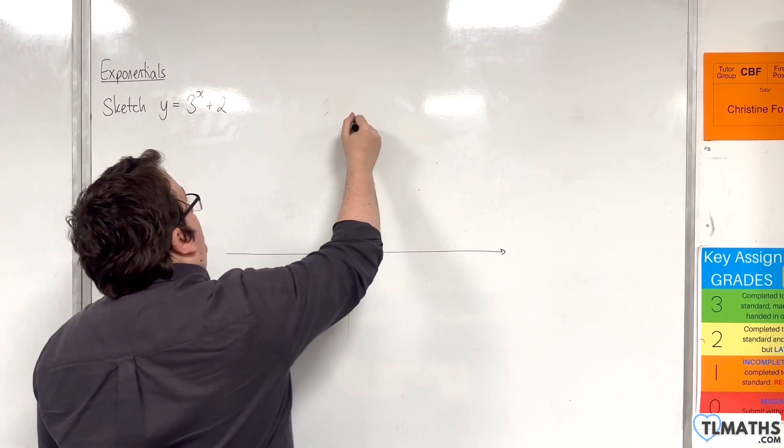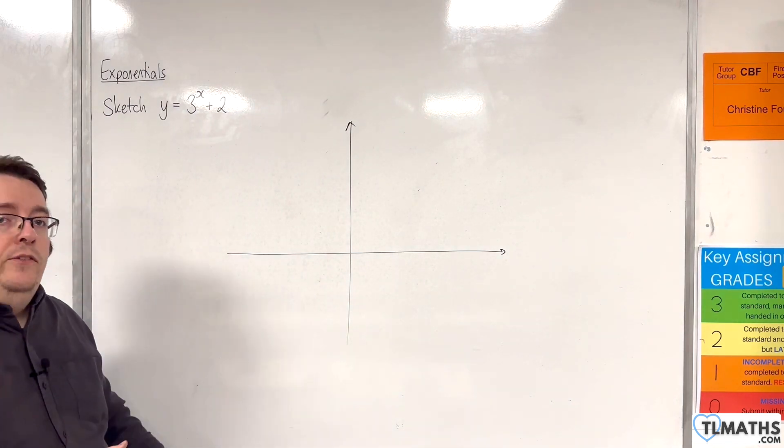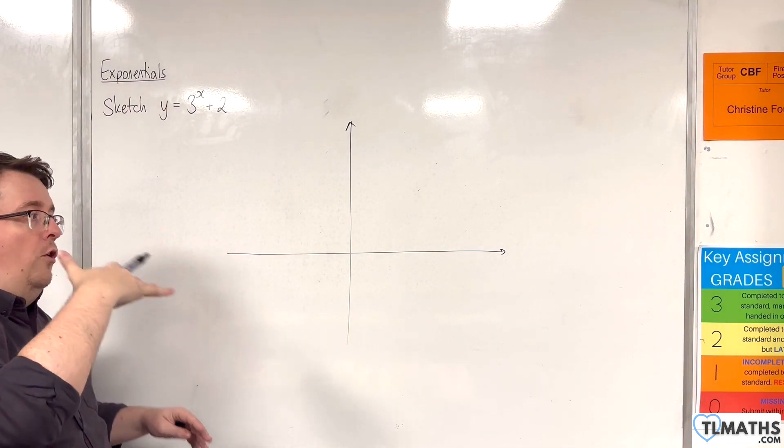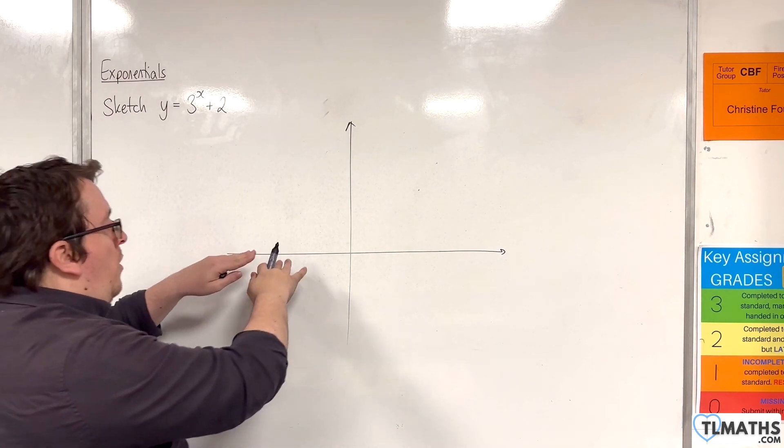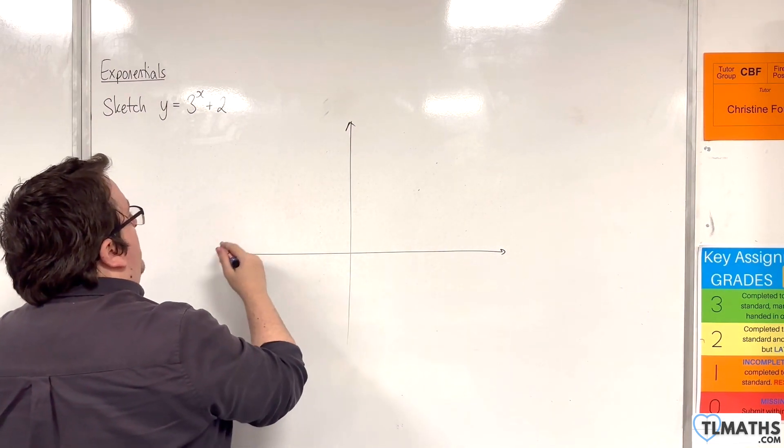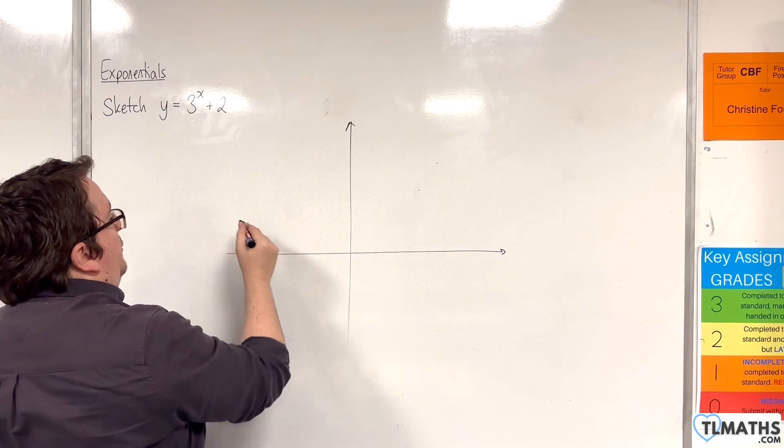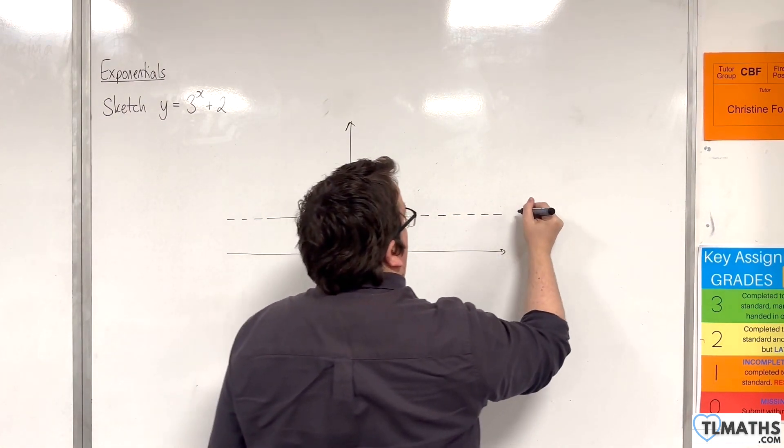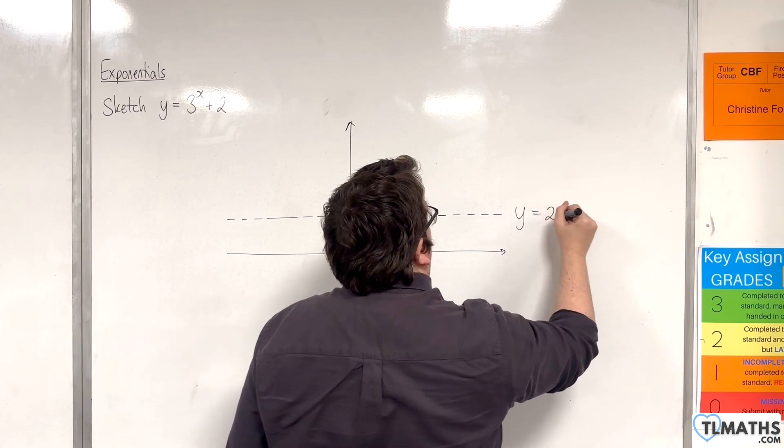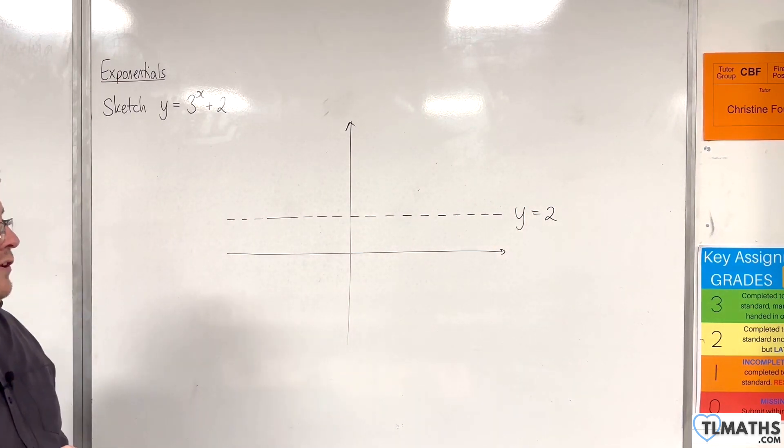The first thing that you need to draw is the new location of the horizontal asymptote. It was on the x-axis, but that will have raised by 2 units as well. So with a dashed line, we're going to have y is equal to 2. That is my horizontal asymptote.